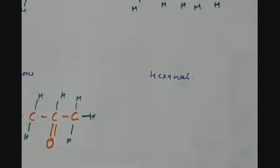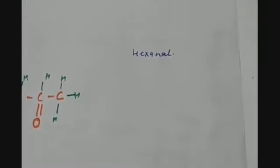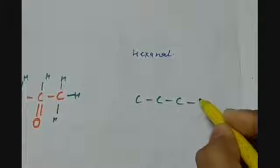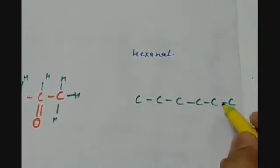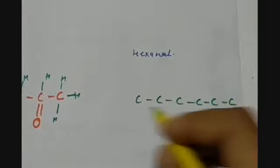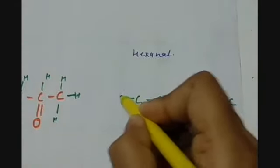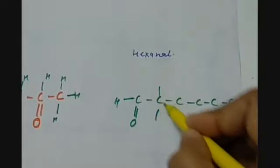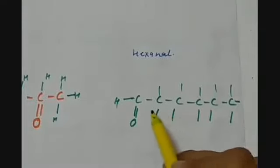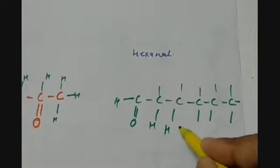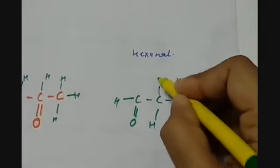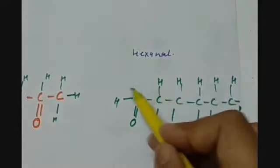Next is hexanal. Hexanal is an aldehyde group — CHO — with 6 carbon atoms. Since aldehyde is a terminal group, it comes at the end with a double bond O and 1 H. The rest of the valencies of the carbon atoms are fulfilled by hydrogen, and the last carbon already has its 4 valencies complete. This completes the structure of hexanal.